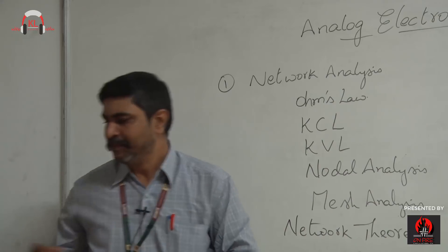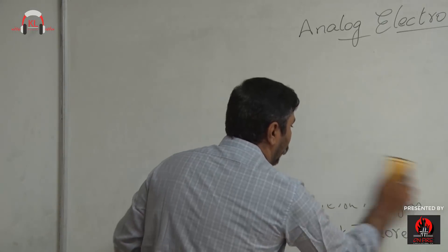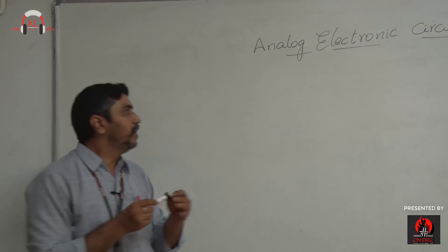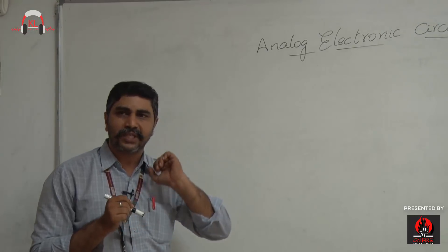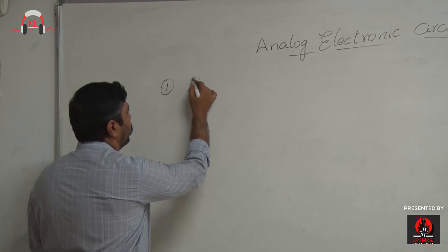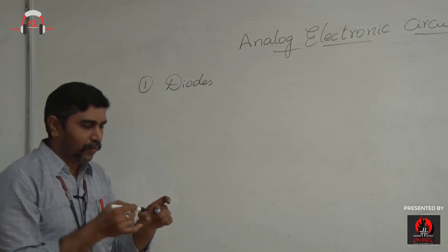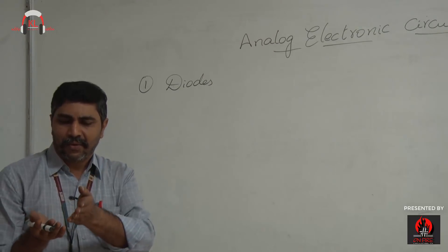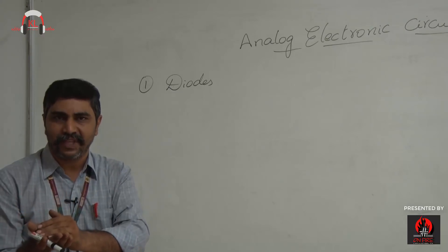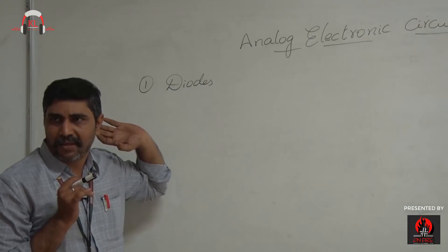Based on these prerequisites, the AECD course is designed into 4 Course Outcomes. The first CO comprises of diodes — what is a diode, how many kinds of diodes are there, and what are the various applications of PN junction diodes. This is the basic component of electronics.